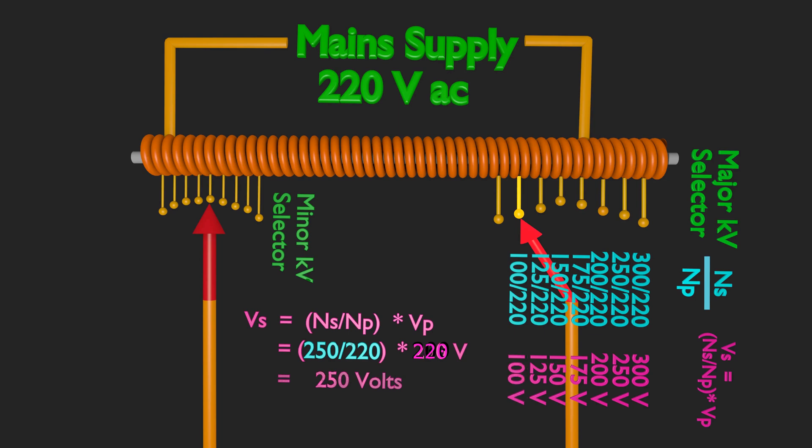While changing one taping to other, voltage variation across secondary is in steps of 25 volts, that is 75 volts then 100 volts, then 125 volt. For voltage variation of 1 volt or less, tapings of minor selector be used.